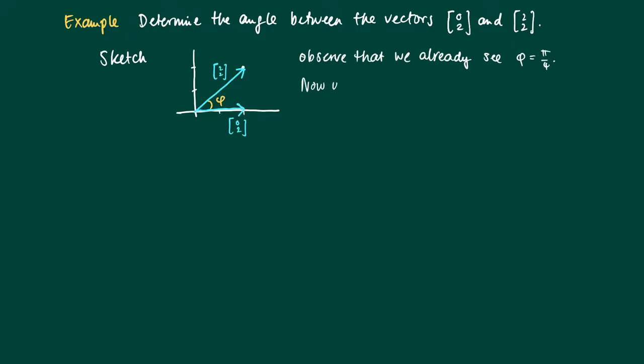Since [2,2] splits the 90 degrees exactly in two halves. Now we use the formula: cosine of φ between these vectors equals the inner product of those two vectors divided by the length of [2,2] and divided by the length of [2,0].